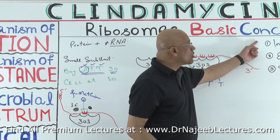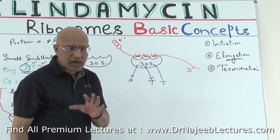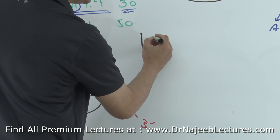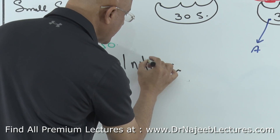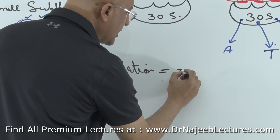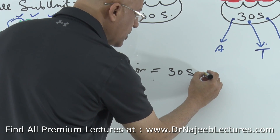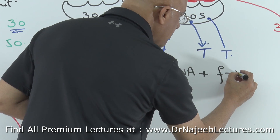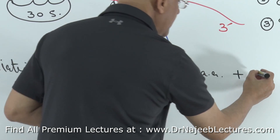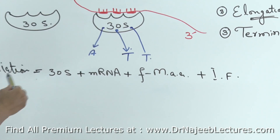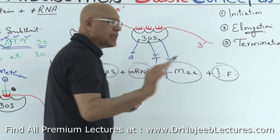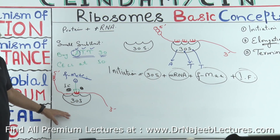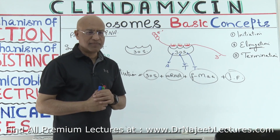Until the initiation complex is formed, the process of translation cannot move forward and cannot go to the stage of elongation of the peptide chain. So the initiation complex equals: 30S ribosomal subunit plus messenger RNA stabilized on it plus formyl methionine amino acid plus initiation factors.